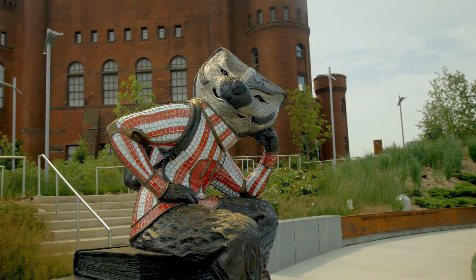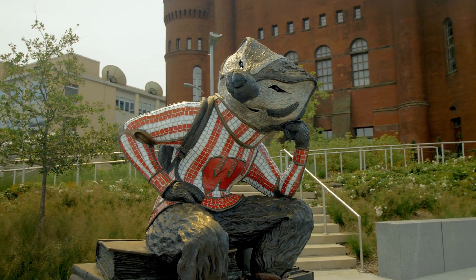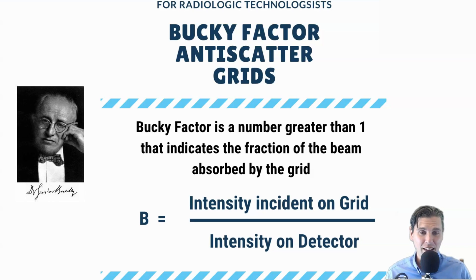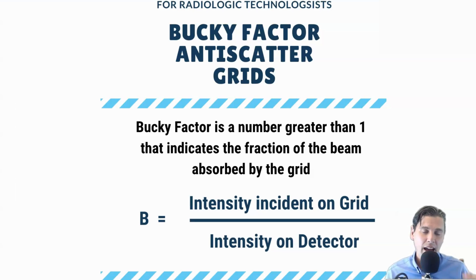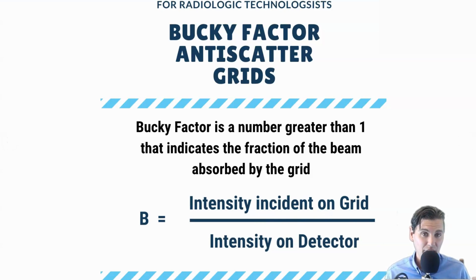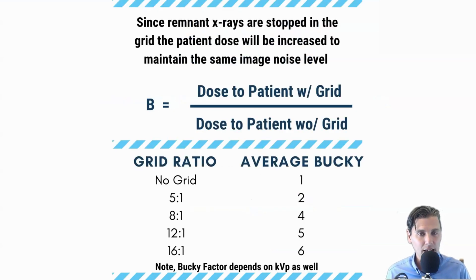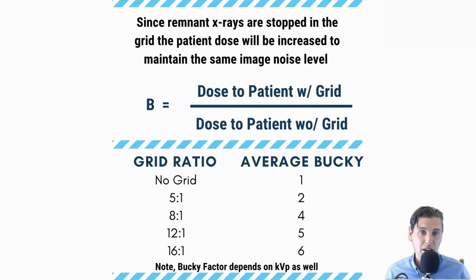That's where the Bucky Factor comes in — and it wasn't Bucky the Badger, but Bucky named after Gustav Bucky, who is the inventor of the x-ray scatter grids. This factor is a ratio, just like the contrast improvement factor was a ratio. It's the ratio of the incident intensity on the grid compared with the incident intensity on the detector. That number on top is higher because the grid filters out some x-ray intensity — so the Bucky Factor also represents how much we have to raise the patient dose when using a grid.